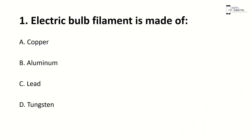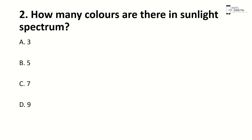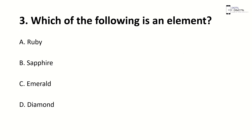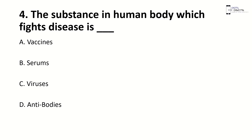Electric bulb filament is made up of tungsten — right answer is D. How many colors are there in the sunlight spectrum? Right answer is C, 7. Which of the following is an element? Right answer is D, diamond. The substance in the human body which fights disease is D — right answer is antibodies.